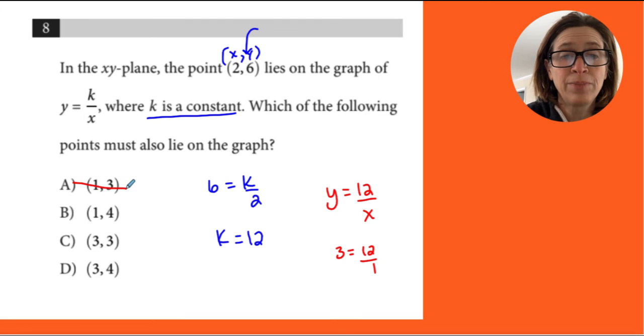4 equals 12 over 1. That's not true. So 3 equals 12 over 3. Well, 3 goes into 12 four times, so that's not true.